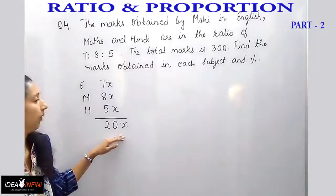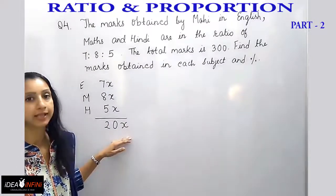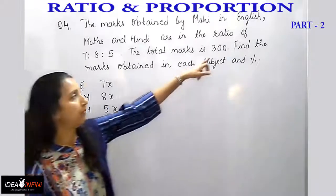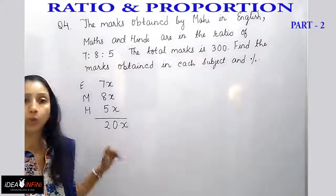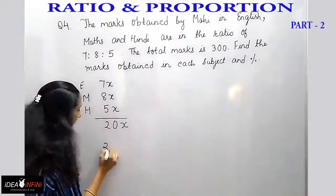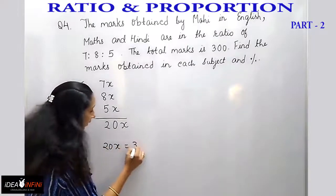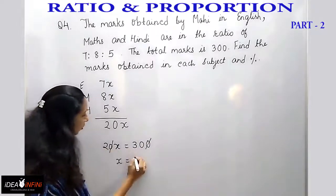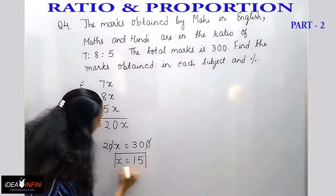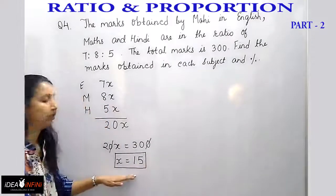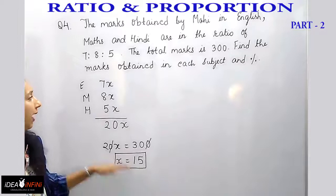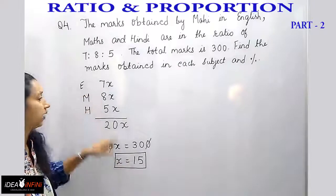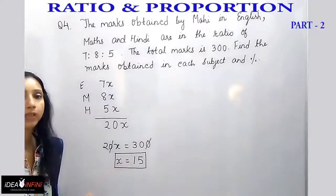We don't know the value of x, so we need to find it. The total marks obtained is 300, so 20x equals 300. Dividing: x equals 30 by 2, which gives x equals 15. Now we can find the marks in each subject by multiplying 7 into 15, 8 into 15, and 5 into 15.